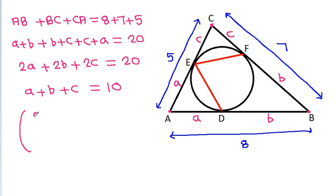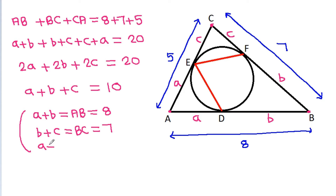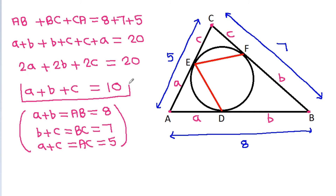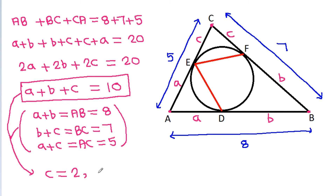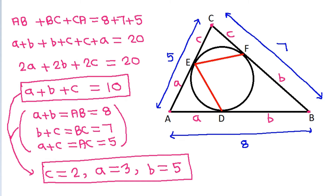We have: a plus b equals AB = 8, b plus c equals BC = 7, and a plus c equals AC = 5. Since a plus b plus c equals 10, we get c = 10 − 8 = 2, a = 10 − 7 = 3, and b = 10 − 5 = 5. So a is 3, b is 5, and c is 2.